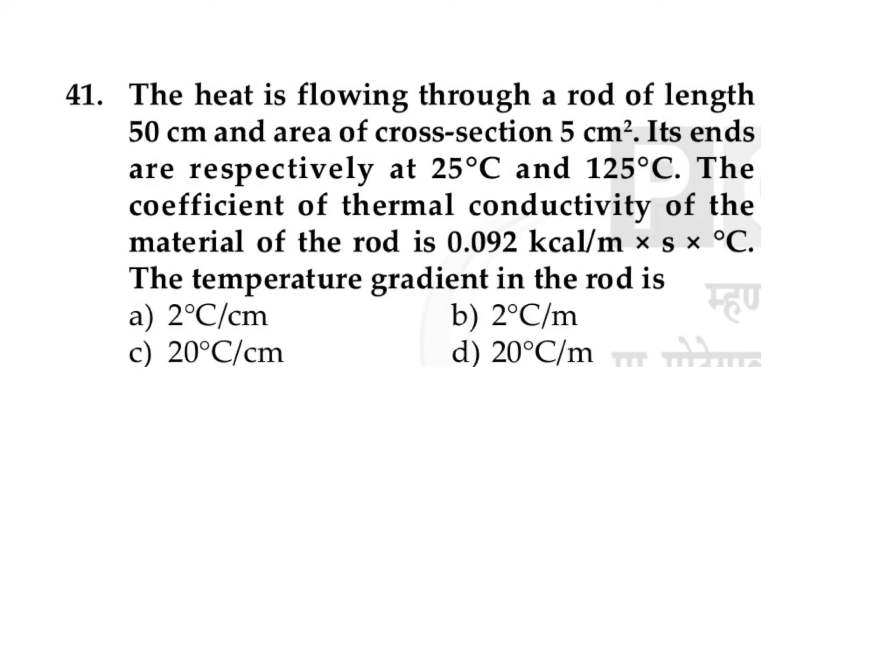This question states that heat is flowing through a rod of length 50 centimeters and area of cross-section 5 centimeter square. Its ends are respectively at 25 and 125 degrees Celsius. The coefficient of thermal conductivity of the material of the rod is given as 0.092 kilocalorie per meter per second per degree Celsius. The temperature gradient of the rod is what we need to find.